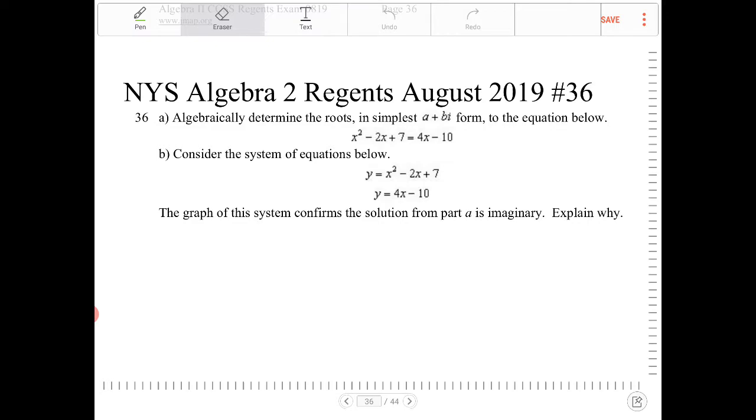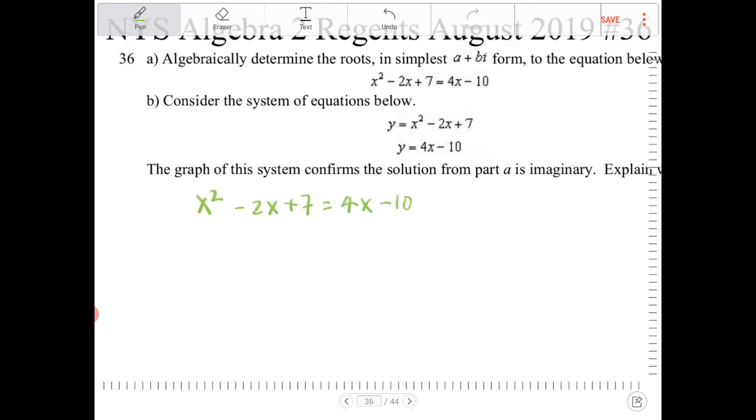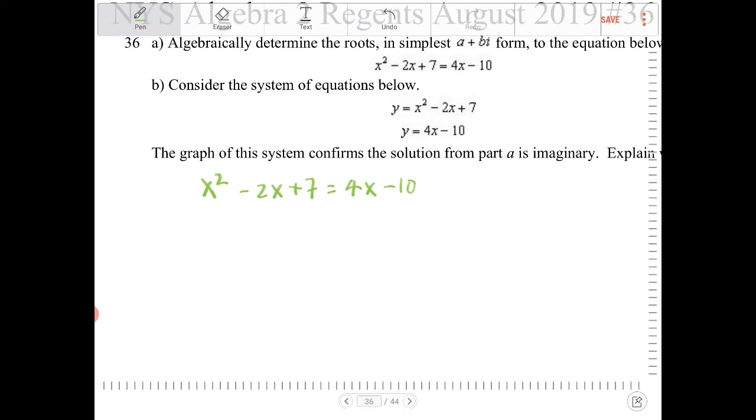So I'm going to start by solving part a first. So we have an equation here, x squared minus 2x plus 7 is equal to 4x minus 10. So to solve this equation, being the left-hand side is a quadratic,